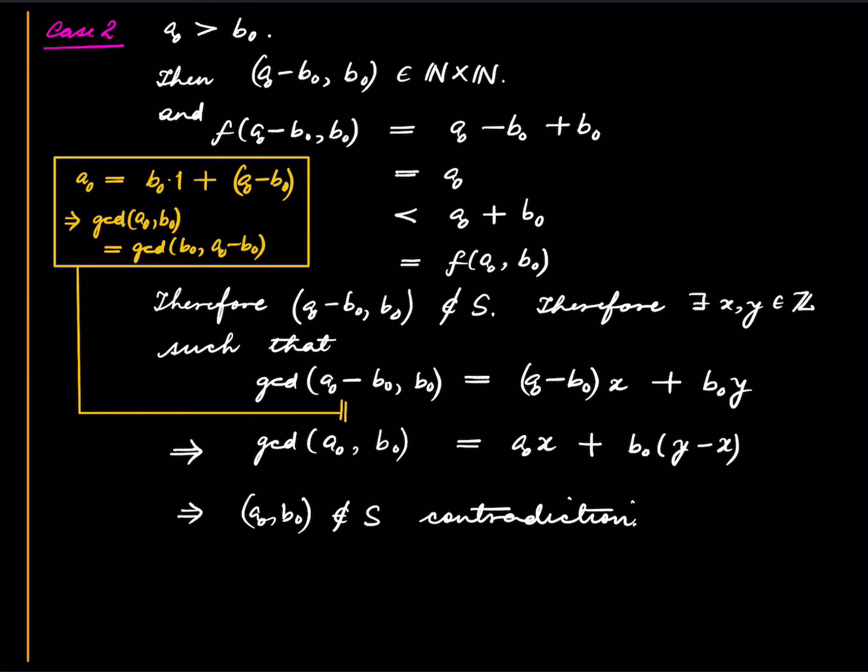And case three is the only remaining case, which is that A0 is less than B0, and this is exactly similar to case two, and this also leads to a contradiction.